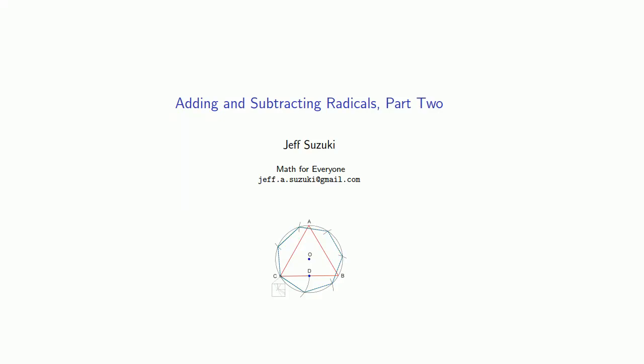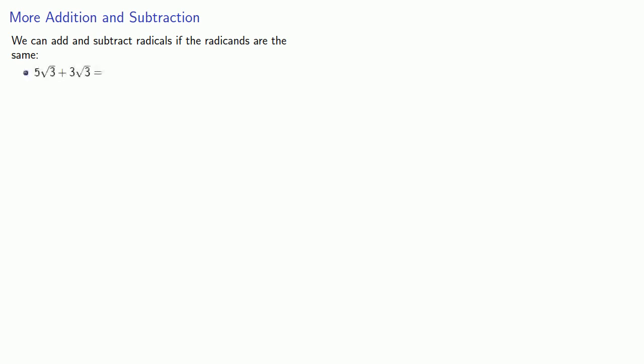Let's take a look at the addition and subtraction of radicals when the radicands are different. Remember that we can add and subtract radicals if the radicands are the same. So 5 square roots of 3 and 3 more square roots of 3 will give us 8 square roots of 3. Or if you have 8 square roots of 2 and you remove 5 of the square roots of 2, then you'll have 3 square roots of 2 left over.